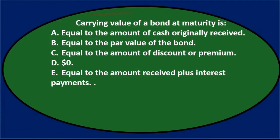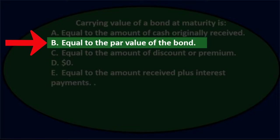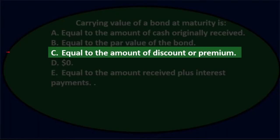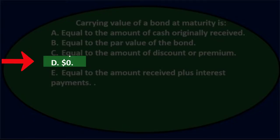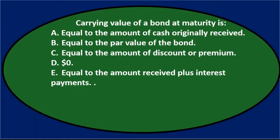First question: carrying value of a bond at maturity is either A) equal to the amount of cash originally received, B) equal to the par value of the bond, C) equal to the amount of discount or premium, D) zero, or E) equal to the amount received plus interest payments.